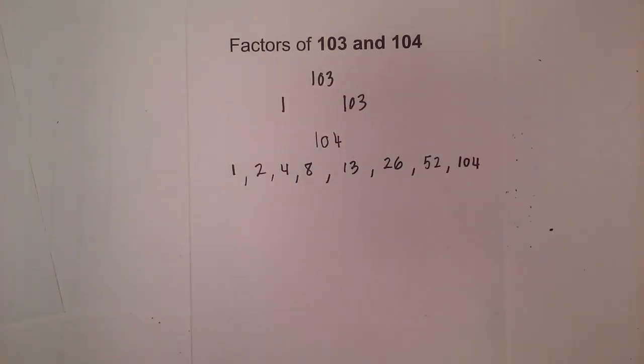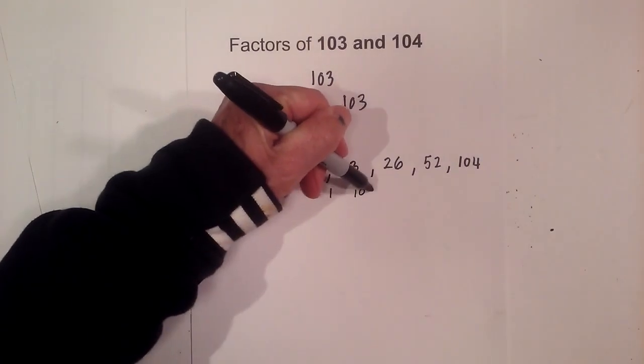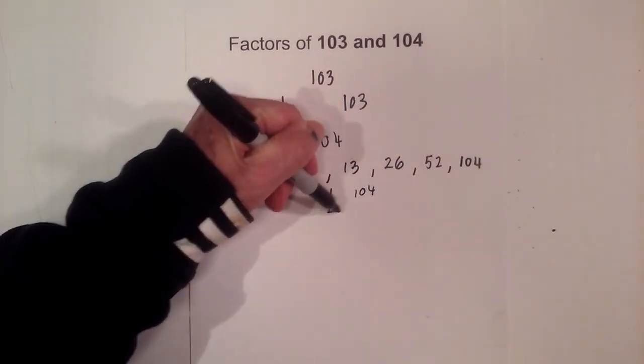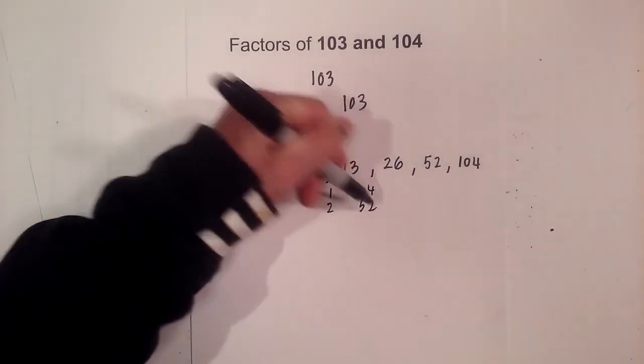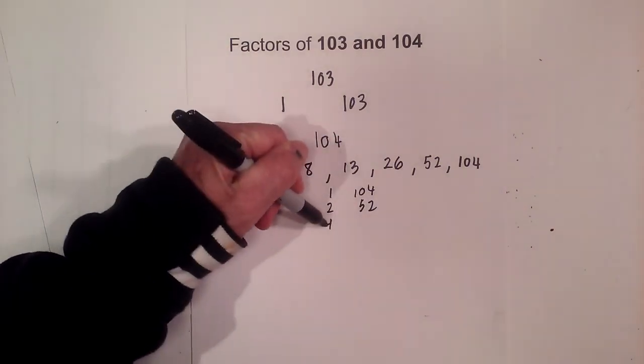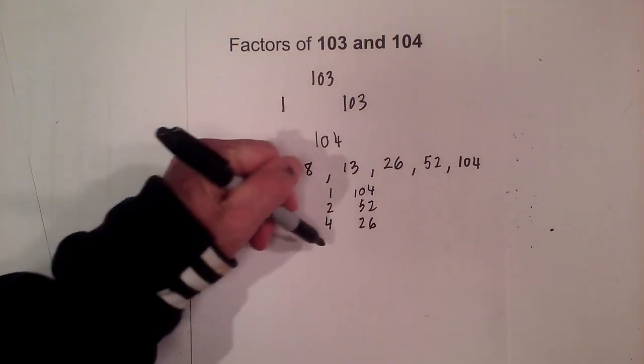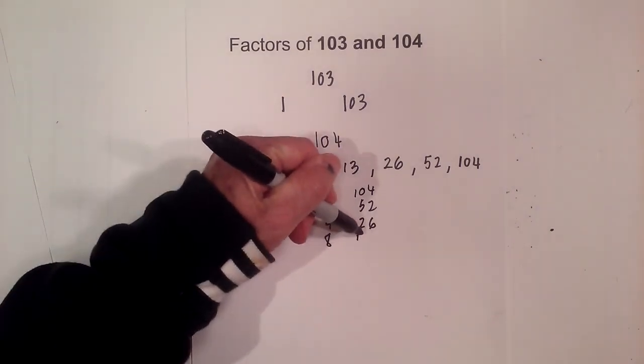If you'd like to see them in pairs, it's 1 and 104, 2 and 52, 4 times 26, 8 times 13.